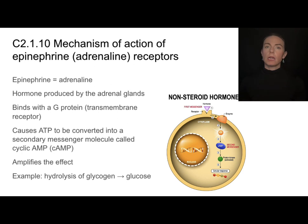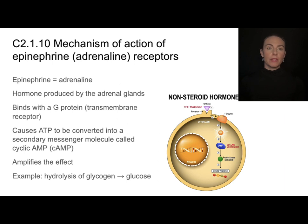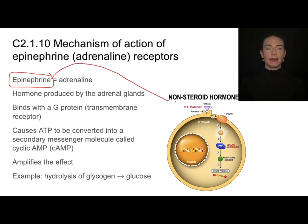Let's put this into context through the example of epinephrine. The IB often refers to this hormone as epinephrine, though some people call it adrenaline—they'll accept either in written answers, but you need to recognize the word epinephrine. This is a hormone produced by the adrenal glands, which sit on top of your kidneys. Epinephrine cannot enter the cell, so it binds with the G protein—those transmembrane proteins in the membrane of the target cell—and that binding causes a secondary messenger molecule cascade.